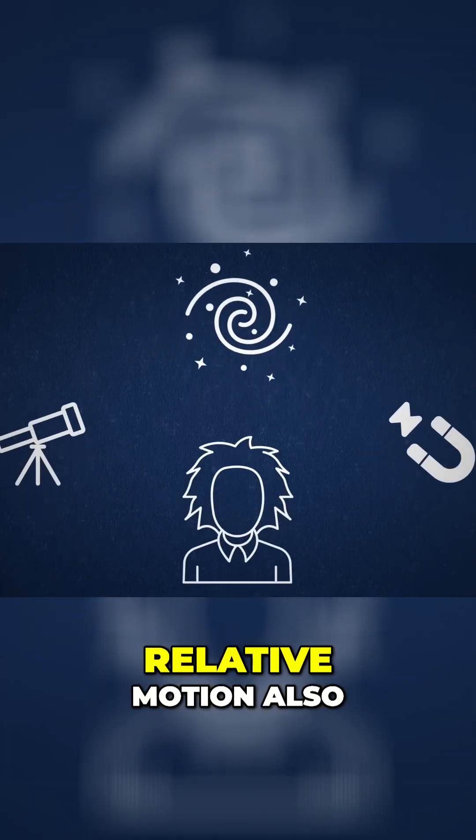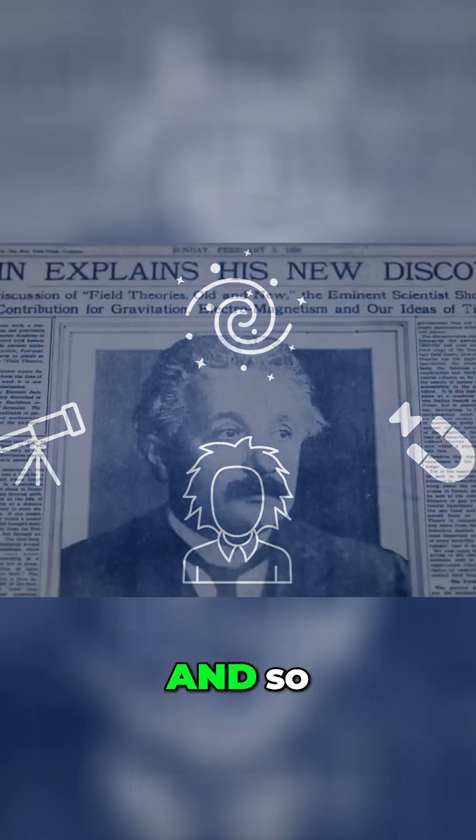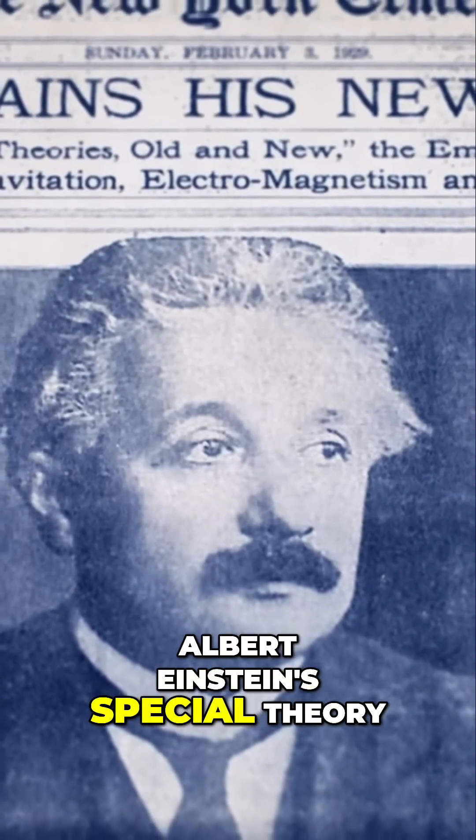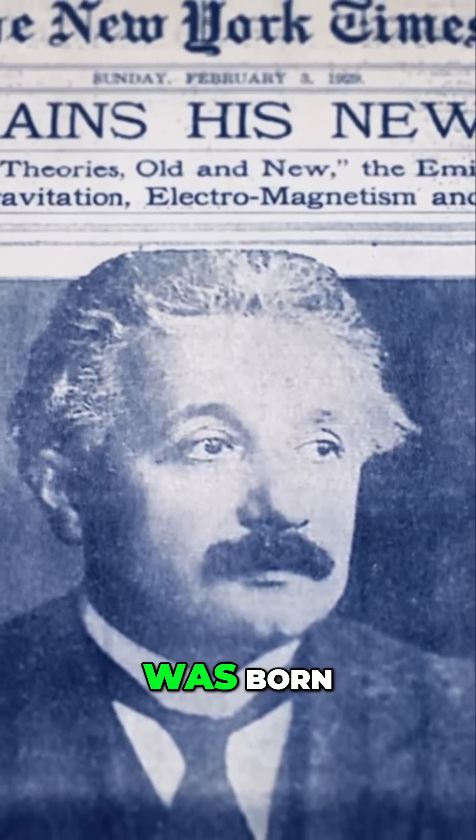Electromagnetism had to respect relative motion also. And so, at the start of the 20th century, Albert Einstein's special theory of relativity was born.